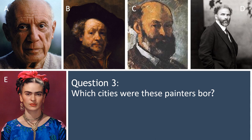Going through the answers: A is Picasso, who was born in Malaga. B is Rembrandt, who was born in Leiden. C is Paul Cézanne, born in Aix-en-Provence. D is Klimt, who was born in Baumgarten. And E is Frida Kahlo, who was born in Mexico City.